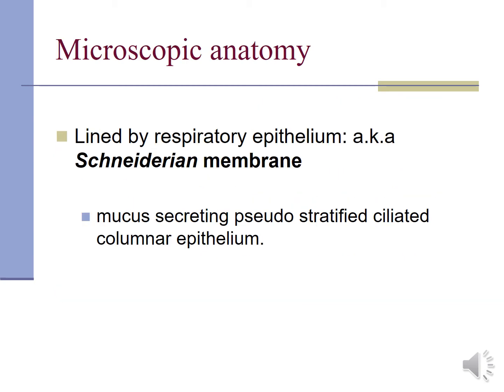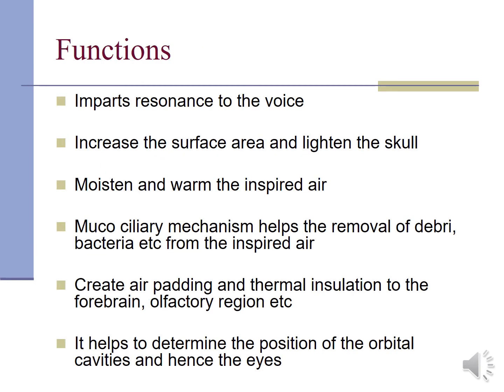Talking about the microscopic anatomy, it is lined by the respiratory epithelium called Schneiderian membrane. It is mucus-secreting pseudostratified ciliated columnar epithelium. The functions of the maxillary sinus include imparting resonance to the voice, increasing surface area, and lightening the skull. It moistens and warms the inspired air. The mucociliary mechanism helps to remove debris, bacteria, etc. from the inspired air. It creates air padding and thermal insulation to the forebrain and olfactory region, and helps determine the position of the orbital cavity and hence the eyes.